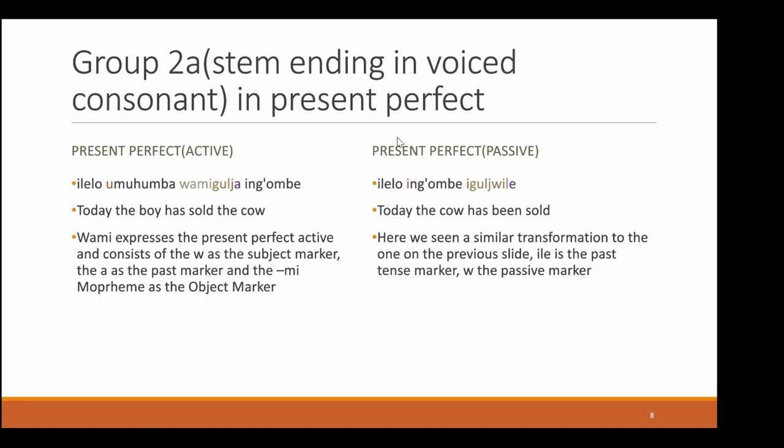In comparison we have the same thing in the present perfect. First in the active: 'elelo umuhumba ukugulya ingombe,' which means 'today the boy has sold the cow.' Here the Vami morpheme expresses the present perfect active and consists of W as the subject marker, A as the past marker, and the me morpheme as the object marker. In comparison in the present perfect passive, the sentence is 'elelo ingombe ikugulwa,' meaning 'today the cow has been sold.' There is a similar transformation to the one on the previous slide — ele is the past tense marker and W is the passive marker.